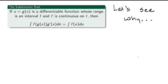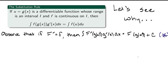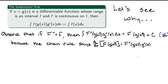Let's see why this can be done in general. Observe that if F′ = f, then the integral of F′(g(x)) times g′(x) dx is equal to F(g(x)) + c. This is because the chain rule tells us that d/dx of F(g(x)) is equal to F′(g(x)) times g′(x).